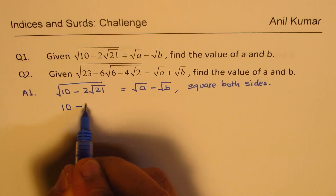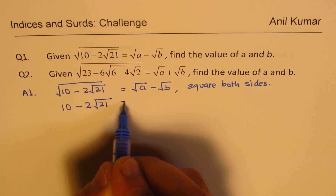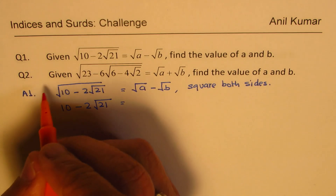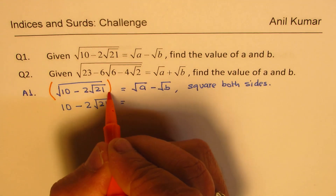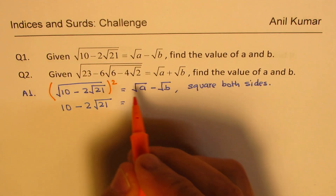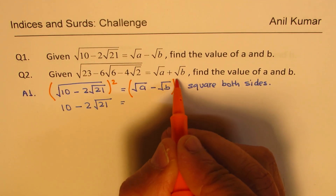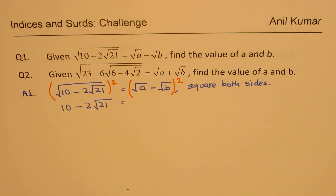After squaring both sides, on the left we get 10 minus 2 square root of 21. On the right, when I square, I get a trinomial — three terms. So the three terms will be the square of square root of A, which is A.